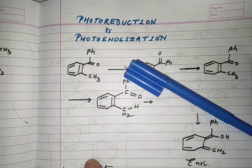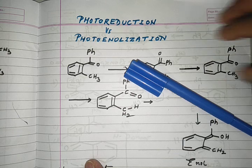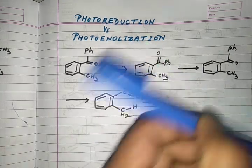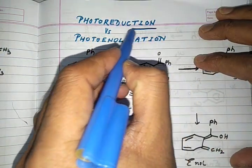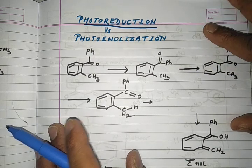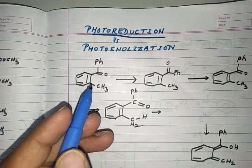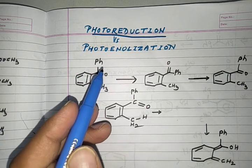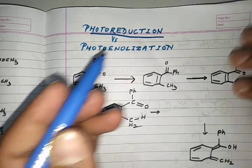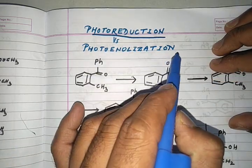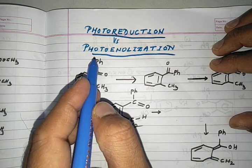Hello everyone, welcome to this lecture. In the last video we discussed photochemical reduction of carbonyl compounds, called photo reduction reactions — carbonyl compounds undergo reduction in the presence of certain hydrogen donors. Similarly, carbonyl compounds also show a very important type of reaction called photoenolization.